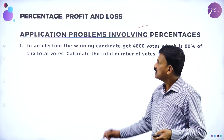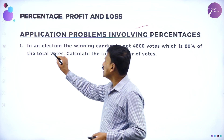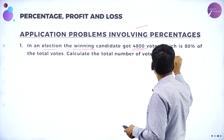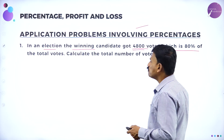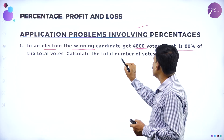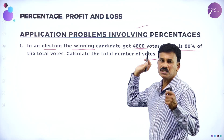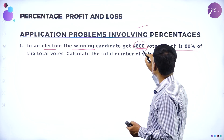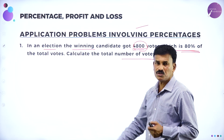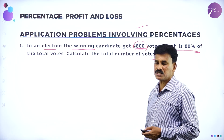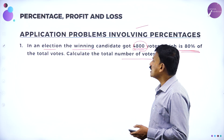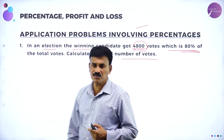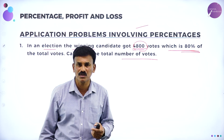Application type problem: in an election, the winning candidate got 4,800 votes, which is 80 percent of the total votes. Calculate the total number of votes. If the winning person got 4,800 votes, that is exactly equal to 80 percent of the votes — then calculate the total number of votes in that given area. This is a very important problem for 2 or 3 marks.